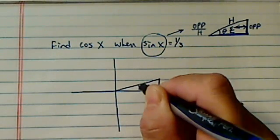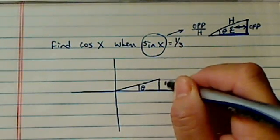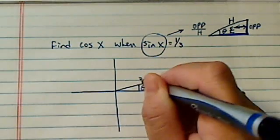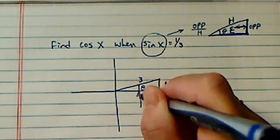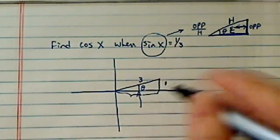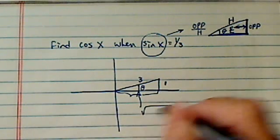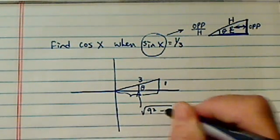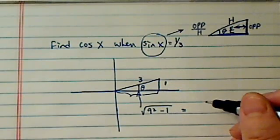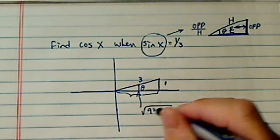Take a look. Here's our theta. This is 1, unit of 1, this is 3. Using Pythagorean theorem to calculate this side which is adjacent, we have 9 squared minus 1, which is 3 squared.